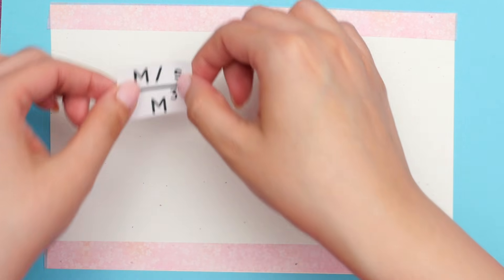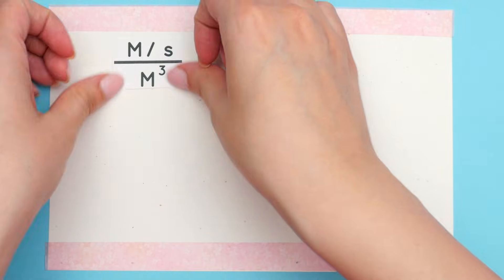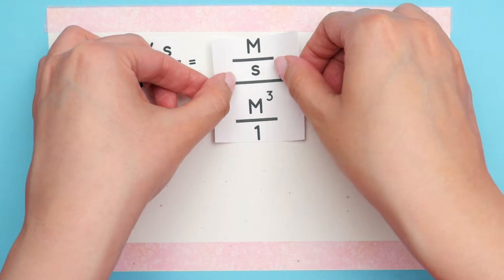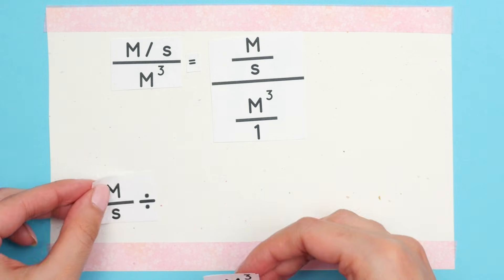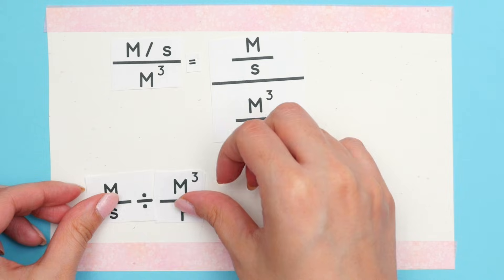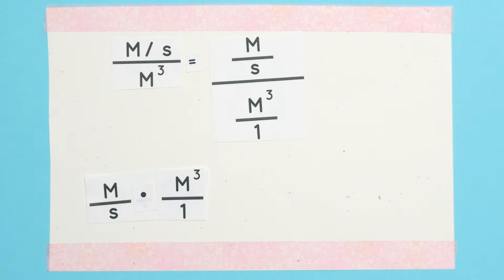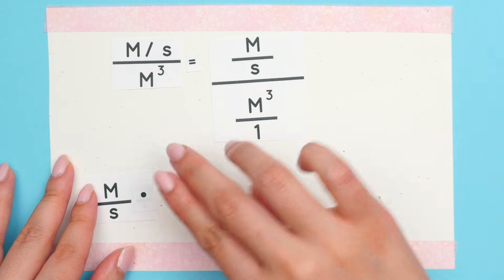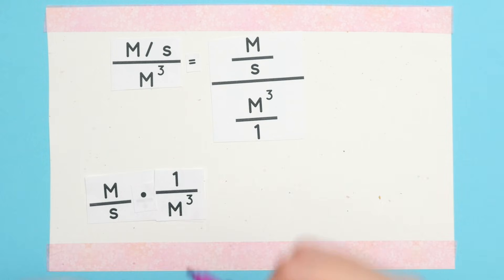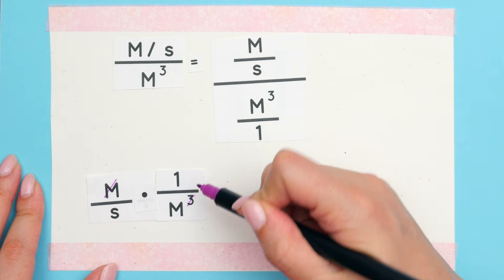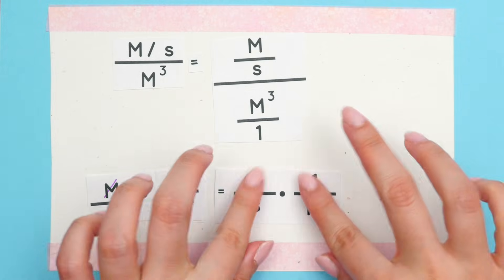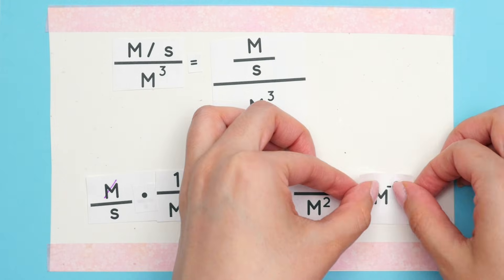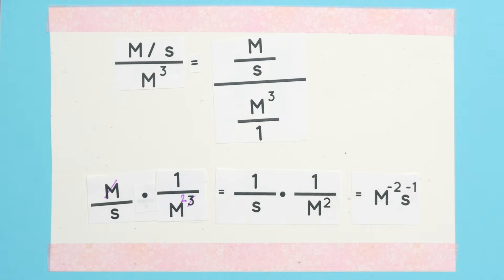Let's do this separately. These are the current units. Now this m is cubed and it's actually divided by 1 and can be rewritten as such. We are dividing fractions in this case and when dividing fractions you must multiply by the reciprocal of the second fraction. 1m cancels and we are left with 1s and m squared at the bottom, which can be rewritten to m to the negative second and s to the negative first.